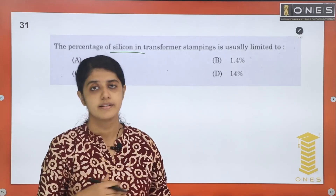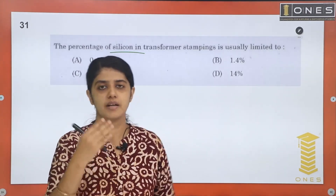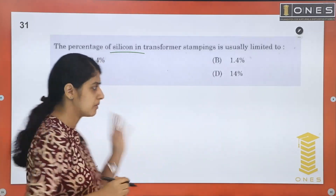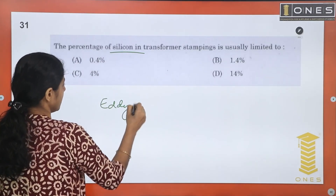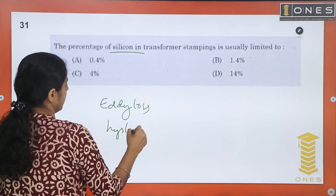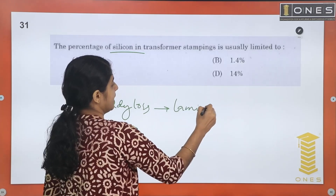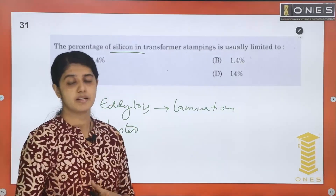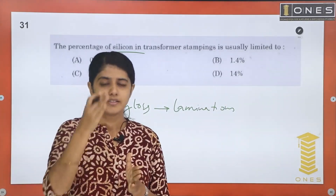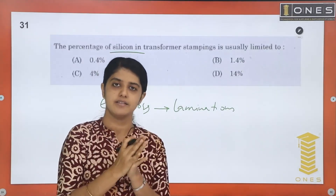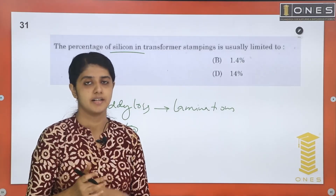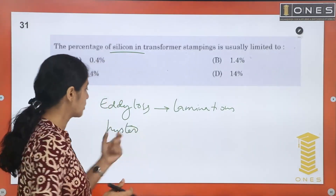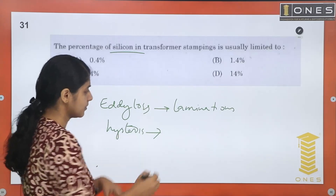We have a lot of stampings in the transformer core laminations, which leads to high hysteresis loss. To reduce eddy current loss, the core is stacked with laminations to add resistance to the eddy current path. To reduce hysteresis loss, we use silicon steel.